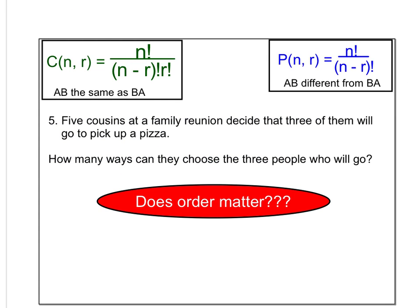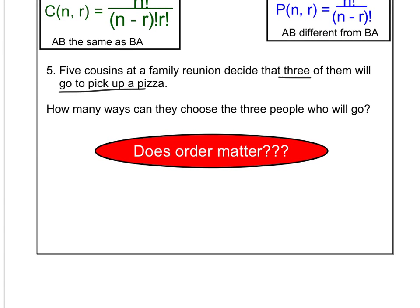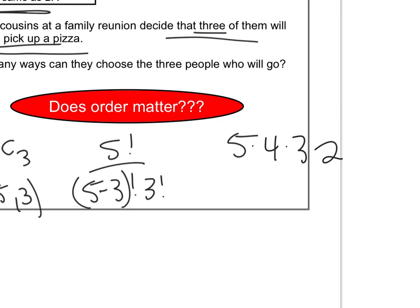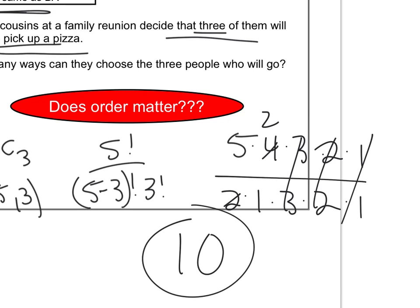So 5 cousins at a family reunion decide that 3 of them are going to pick up a pizza. Well, if you're one of the 3, it doesn't matter if you get picked first or last. So 5 are going, 5 cousins, 3 of them are going. That's going to be a combination. Order does not matter. So that's going to be 5 choose 3, or C(5,3). So 5 factorial over 5 minus 3 factorial, 3 factorial. So you've got 5, 4, 3, 2, 1 over 2, 1, 3, 2, 1. 4 over 2 is 2. So I've got 10 different possibilities there.